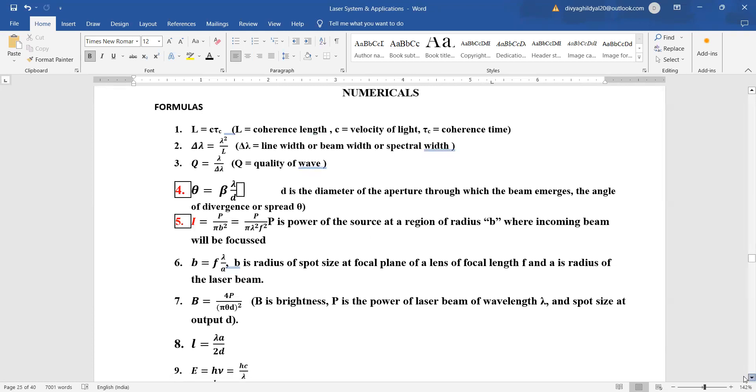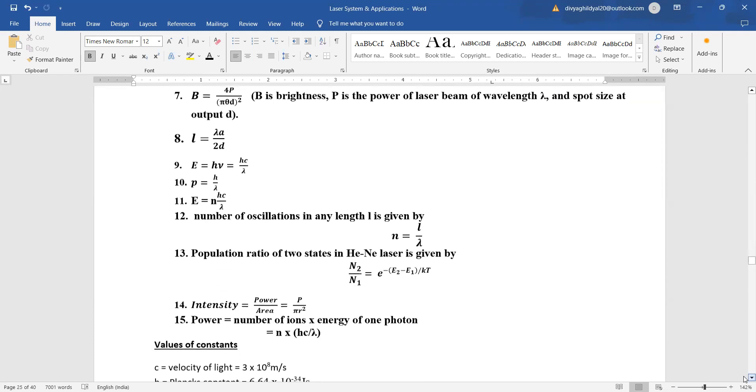The length for temporal coherence is lambda a upon 2d. Energy e is equal to h nu, which is equal to h c by lambda. Momentum p is equal to h upon lambda. Energy is also given by n into h c by lambda, where n can be the number of photons.